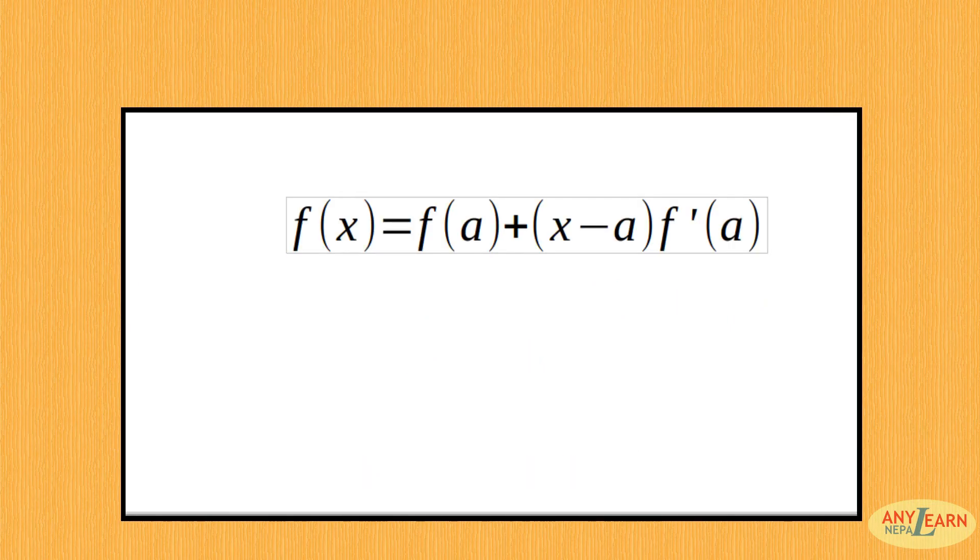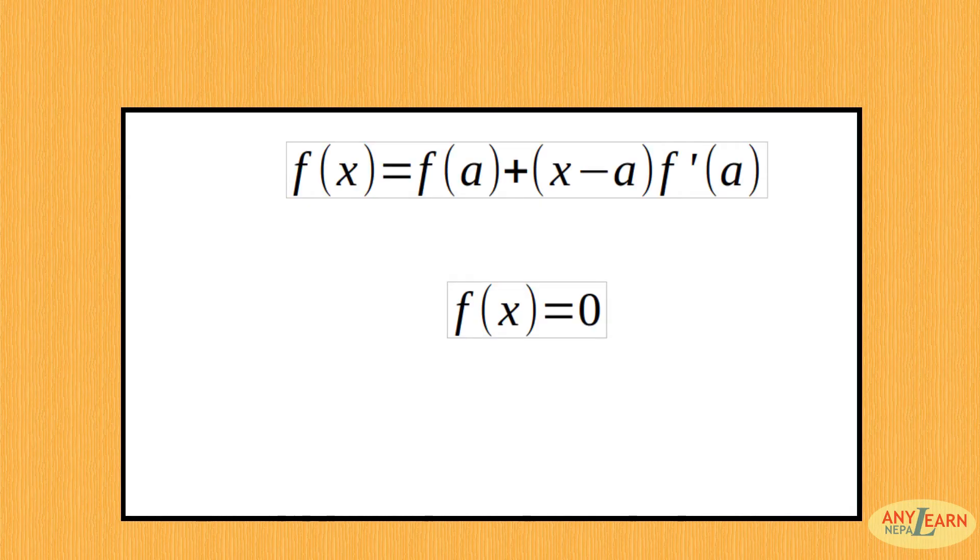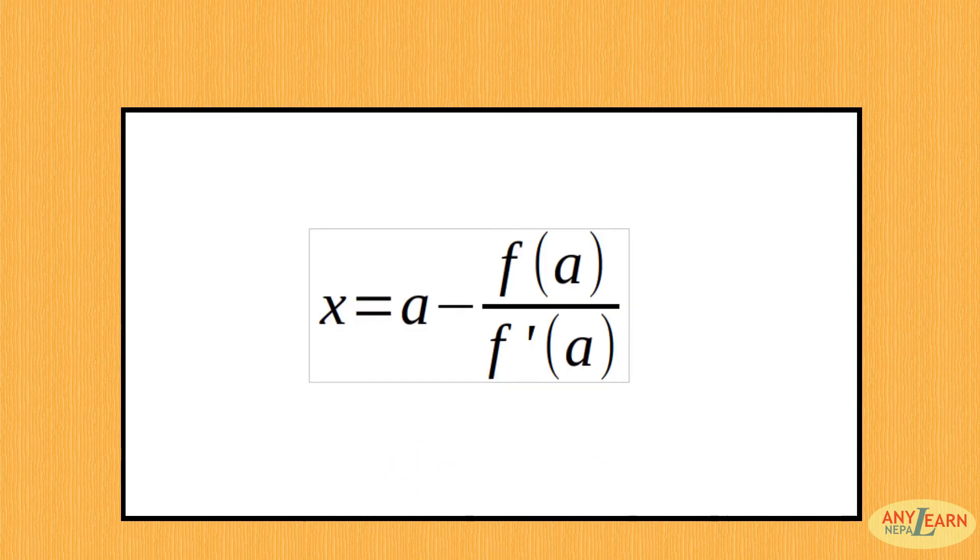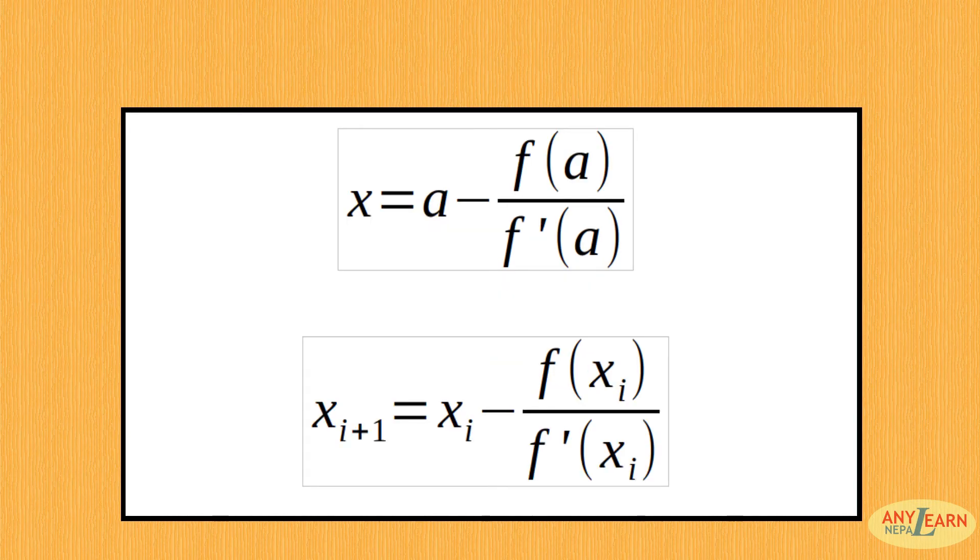We have f(x) equals f(a) plus (x minus a) times f'(a). We have to find the root, that is the value of x for which f(x) equals 0. So 0 equals f(a) plus (x minus a) times f'(a). On solving, we can write x equals a minus f(a) by f'(a). So a is the approximated root here, and x is the calculated root.